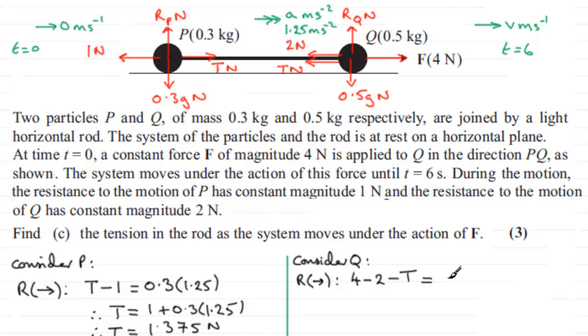And now this equals the mass times acceleration. The mass is 0.5. And the acceleration is 1.25. So again, if we rearrange this, we've got 4 minus 2, which is 2. So we've got therefore 2 minus T. I'm going to add T to both sides and subtract 0.5 multiplied by 1.25. That would leave me with T. And if you work this sum out, you again get that T equals 1.375 newton.